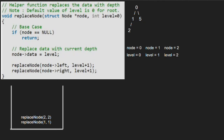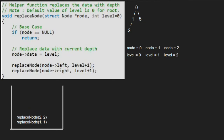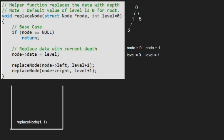Now we pass the left child of node 2, which is null. Since node is pointing to null, we return to the previous call. Execution for node 2 is resumed and now we pass the right child of 2, which is also null, so node will point to null. Again, since node is null, we return to the previous call and finish execution for node 2. Execution for node 1 is resumed and now we pass the right child of 1, which is null. Since node is pointing to null, we return to the previous call and finish execution for node 1.